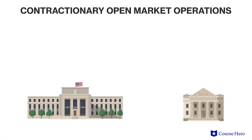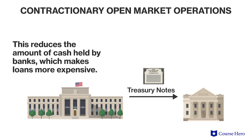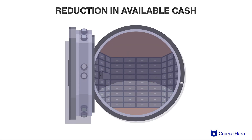As a first resort, the Fed will pursue contractionary open market operations. Treasury notes held by the Fed will be sold to member banks. This reduces the amount of cash held by banks, which makes loans more expensive and thus suppresses demand. As the loans between banks become more and more expensive, in order to satisfy their minimum reserve requirements, the amount of cash available to banks for the purposes of lending is reduced.